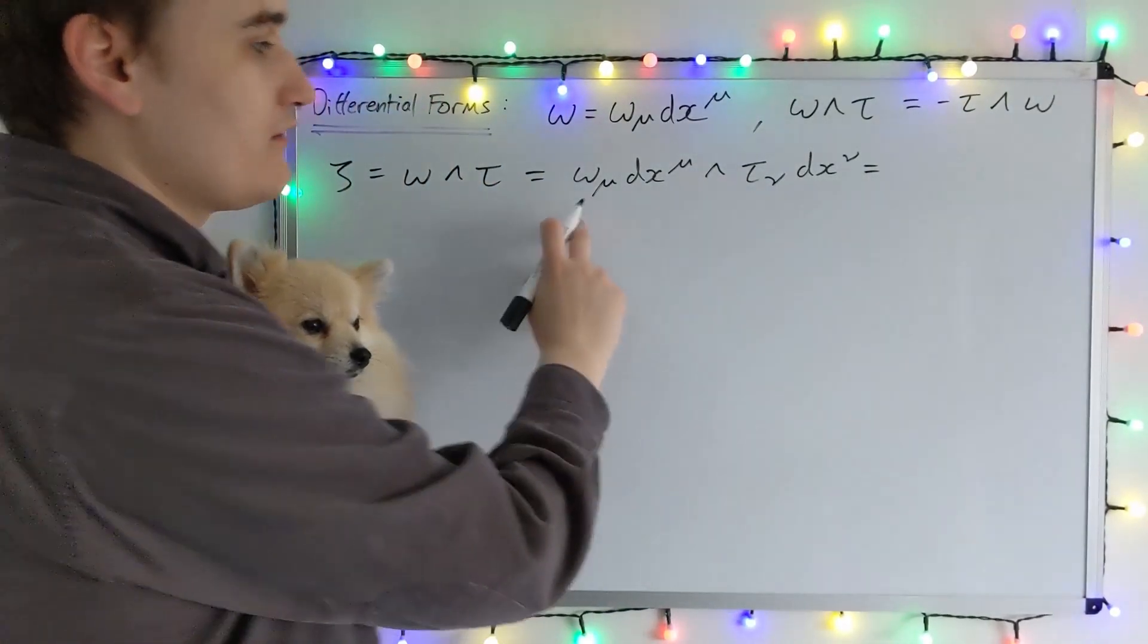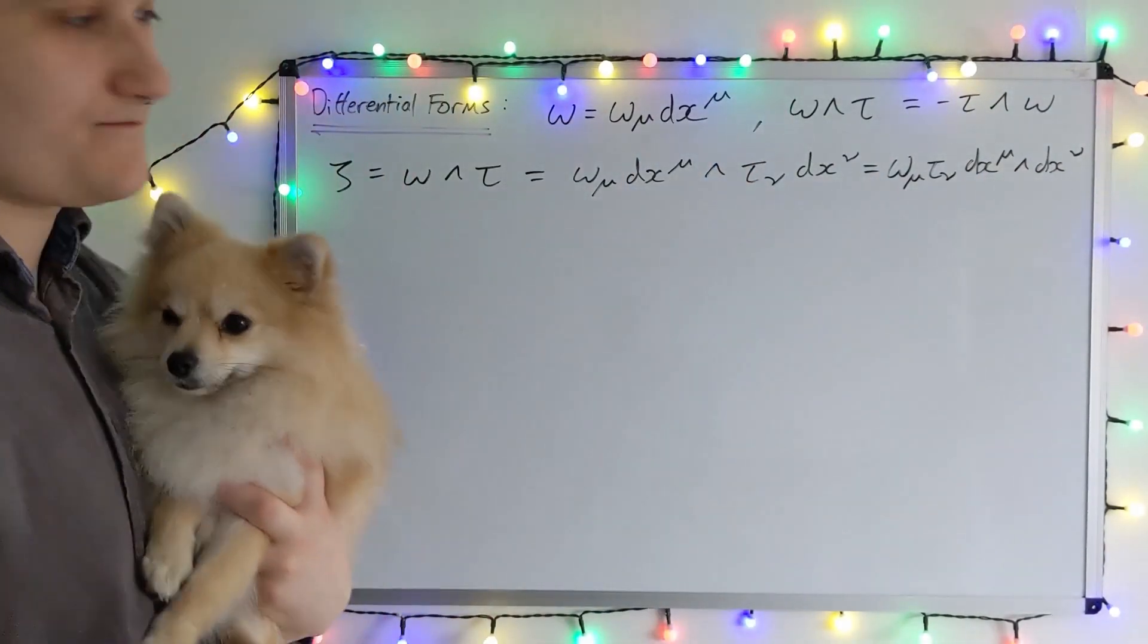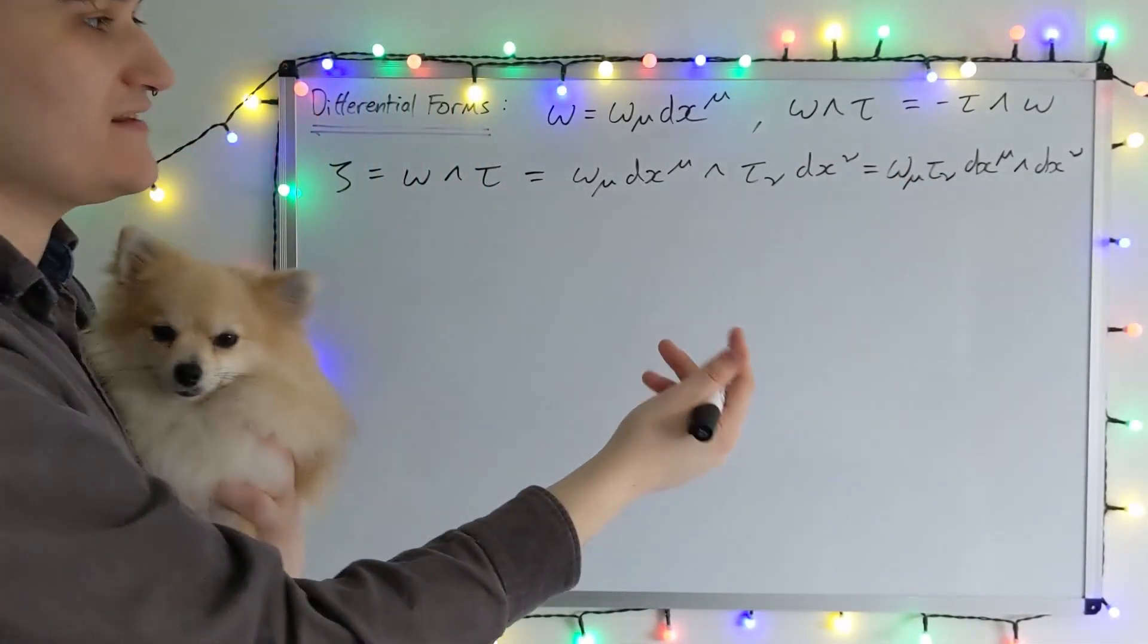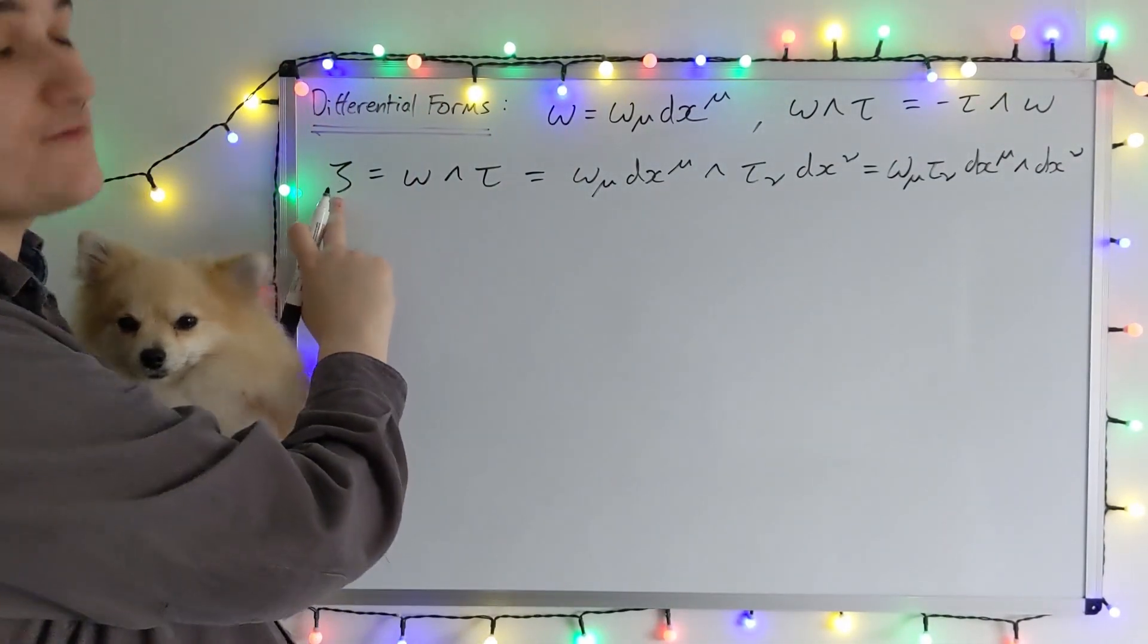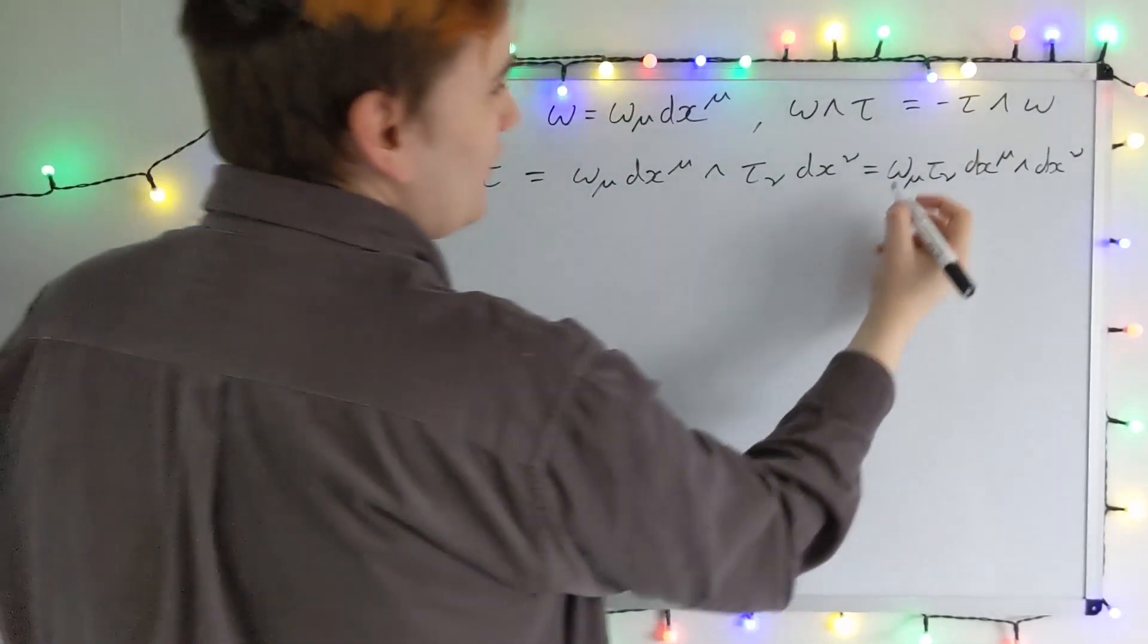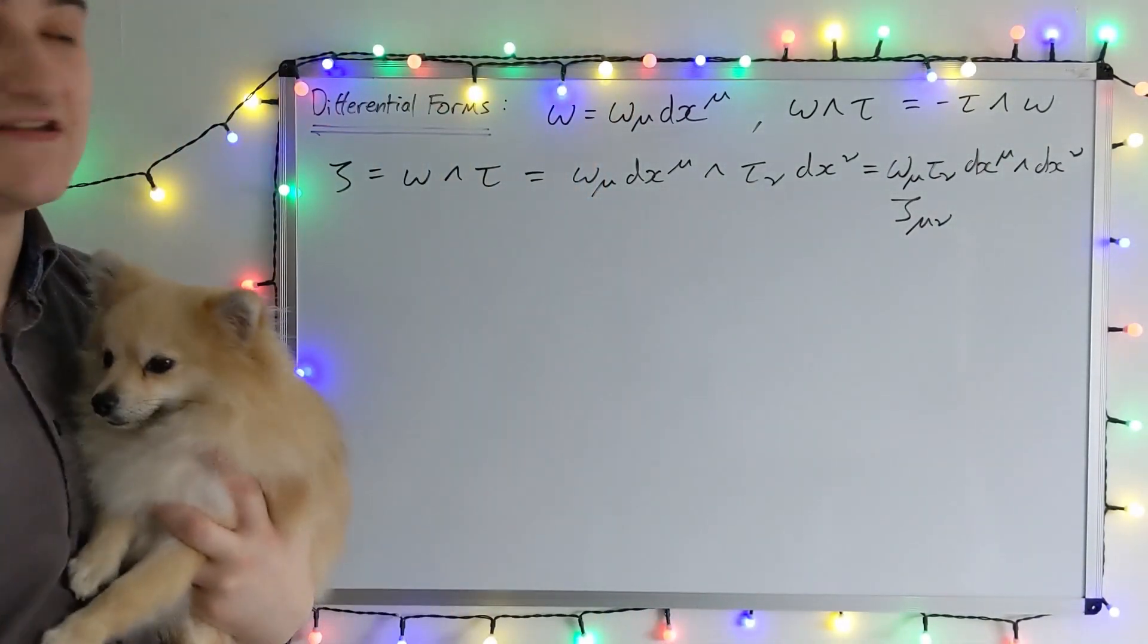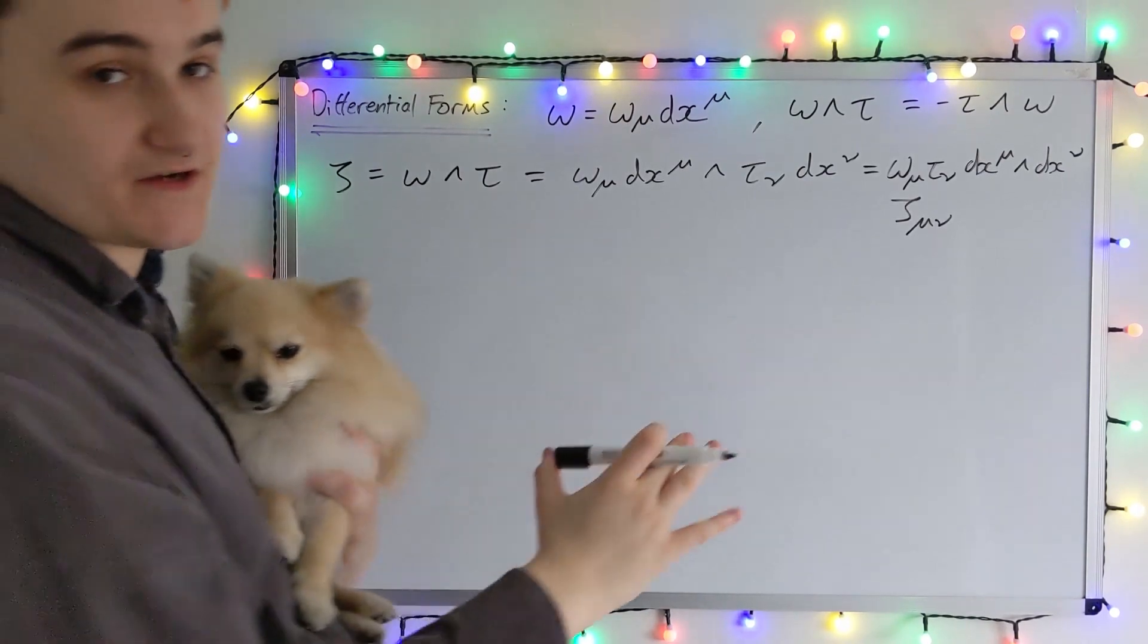So this whole thing I can just rewrite like this. And now this object here, this omega mu tau nu with two indices, I could just relabel as now our two form zeta. I could just call this zeta mu nu with two indices now. And this is the expression for our two form.